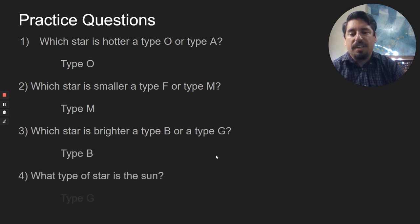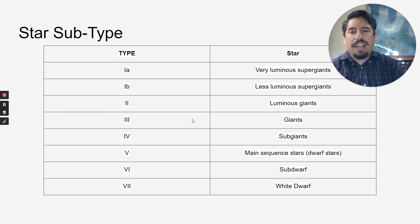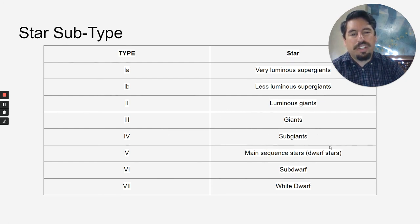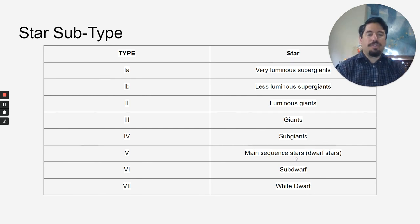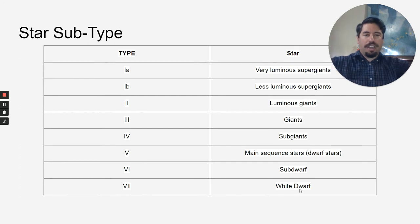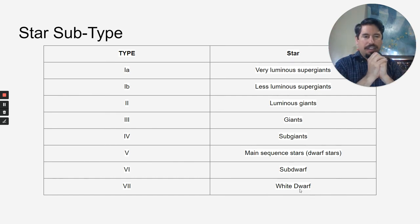The sun is type G. So we have our types O-B-A-F-G-K-M. And then we have subtypes: 1A and 1B are supergiants, 2 is luminous giants, 3 is giants, 4 is sub-giants which are a little smaller, 5 is main sequence — these are normal stars, 6 is sub-dwarf, and 7 is white dwarf. So it's measuring the size — 1 is the biggest and 7 is the smallest.